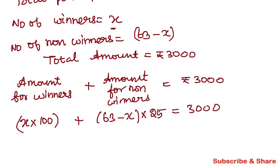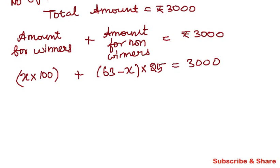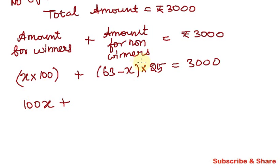So, amount for winners plus amount for non-winners equals total amount of ₹3,000. If we simplify and multiply it, x into 100 gives 100x. And 25 into 63 minus x gives the non-winners amount. So we calculate 25 into 63.